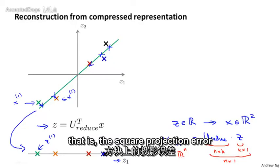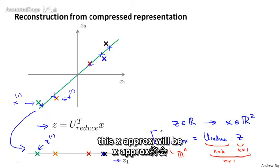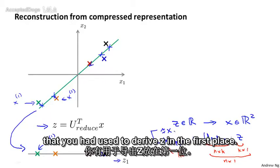The intent of PCA, if the square projection error is not too big, is that this x_approx will be close to whatever was the original value of x that you had used to derive z in the first place.